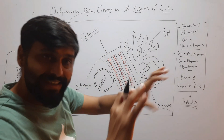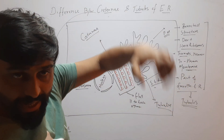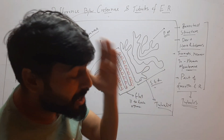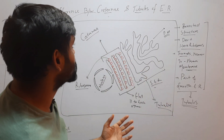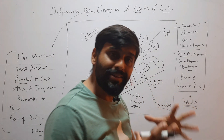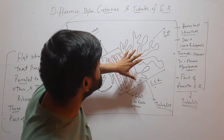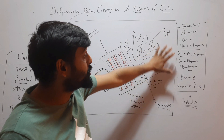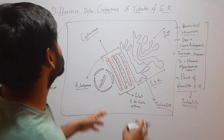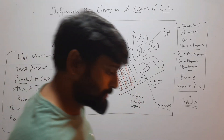So, cisternae are flat structures. They are parallel to each other, studded with ribosomes, near to the nucleus, and part of rough endoplasmic reticulum. Tubules are branched structures — they don't have ribosomes, they are present toward the plasma membrane, and they are part of smooth endoplasmic reticulum. This is the difference between cisternae and tubules of endoplasmic reticulum.